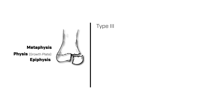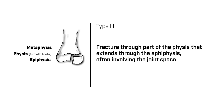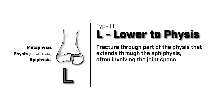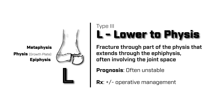A type 3 Salter-Harris fracture is a fracture through the growth plate which extends into the epiphysis. The third letter in Salter is an L, which stands for lower to the growth plate, because the fracture extends below the physis. This type of fracture has a prognosis that varies, and if there is significant involvement of the joint, this fracture can be unstable and operative management can be considered.